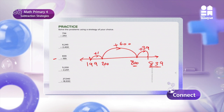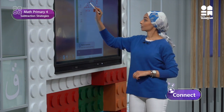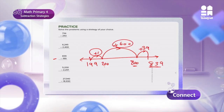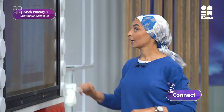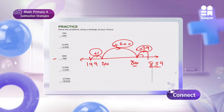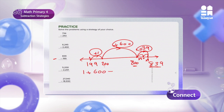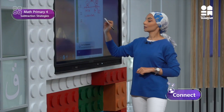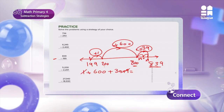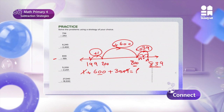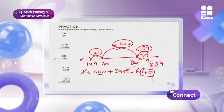So my answer is: I will add 1 plus 600 plus 39. I can break it as 30 plus 9. So: 30 plus 9 is 39, plus 1 is 40, plus 600 equals 640. The final answer is 640.